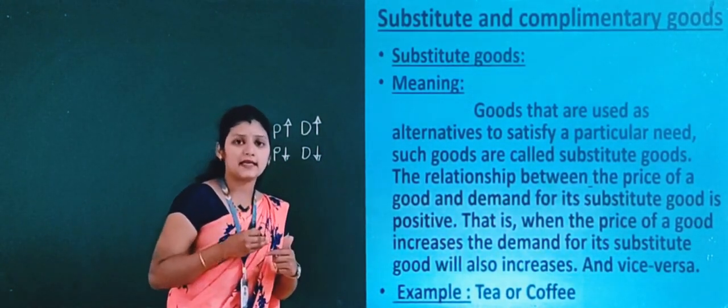The last important difference is the examples: substitute goods include tea and coffee, and Coke and Pepsi, while complementary goods include tea and sugar, car and petrol, bike and petrol, and pen and ink. These are the important differences between substitute and complementary goods. In the next class, we will talk about movement along the demand curve and shift in the demand curve. Thank you.